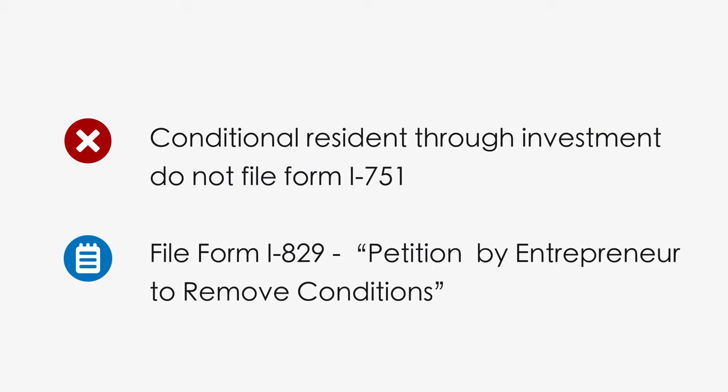As long as the petitioner's children acquired conditional residence on the same day or within 90 days thereafter, they can be included on the same petition. But if their conditional status was granted at a time outside that 90-day window, a separate petition must be filed on behalf of the children.